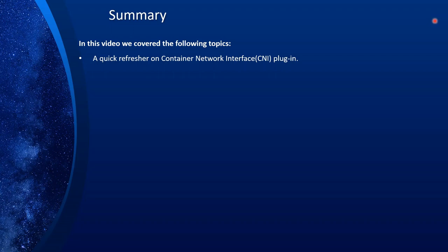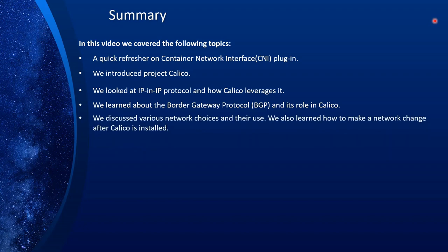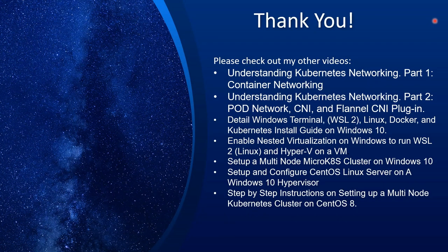We introduced Project Calico as a CNI option. We looked at the IP-in-IP protocol and how Calico uses it. We learned about Border Gateway Protocol, an important topic when using Calico and how it's leveraged. We discussed various network choices and when to use each. We also learned how to make network changes after Calico is installed using calicoctl. Thank you so much for your time. If you like it, please give it a like and consider subscribing. I have other courses in networking — I'll include the names and links in the description below. Thank you and please take care.